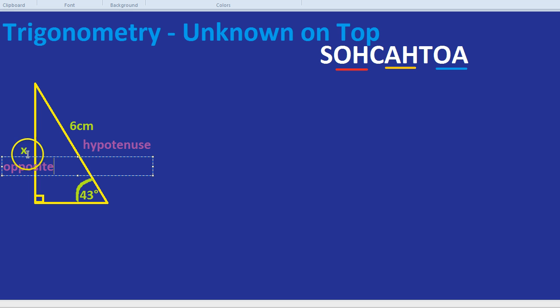Now, we can see which relationship we're going to need to look at. The adjacent down here, we don't know, and we're not looking for it. SOHCAHTOA involves the opposite and the hypotenuse. Sine, sine indeed.